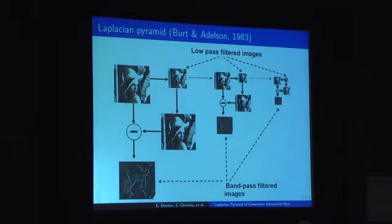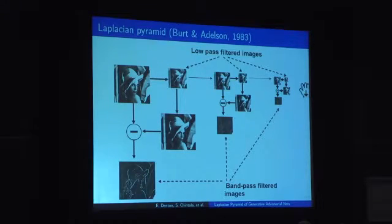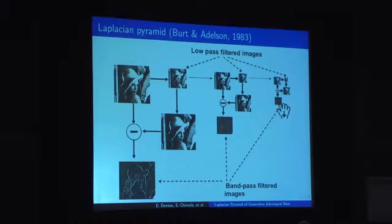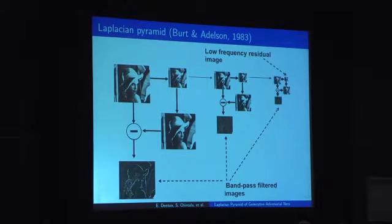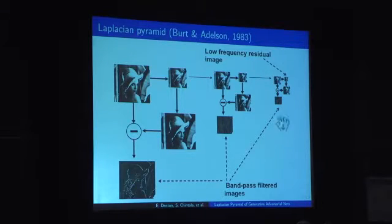The Laplacian pyramid is an invertible multi-scale image representation. It's obtained by first constructing a Gaussian pyramid, illustrated in the top row, and then computing a difference image between consecutive scales of the pyramid. The result is a sequence of bandpass filtered images and low-pass filtered images. The Laplacian pyramid is then given by this single low-frequency residual image and these bandpass filtered images. The original image can be reconstructed exactly by simply adding in the high-frequency information to the low-frequency images. What we are going to do is learn a conditional generative model for each scale of the Laplacian pyramid.